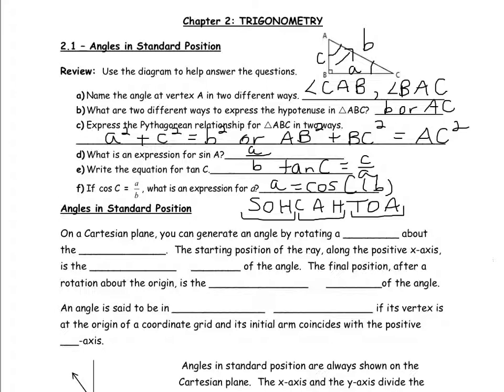An expression for the sine of angle A: starting at angle A, sine is opposite over hypotenuse, so opposite to angle A is little a over the hypotenuse little b. An equation for tangent of angle C: starting at angle C, tangent would be opposite over adjacent, so little c over little a would be the expression for the tangent of angle C.